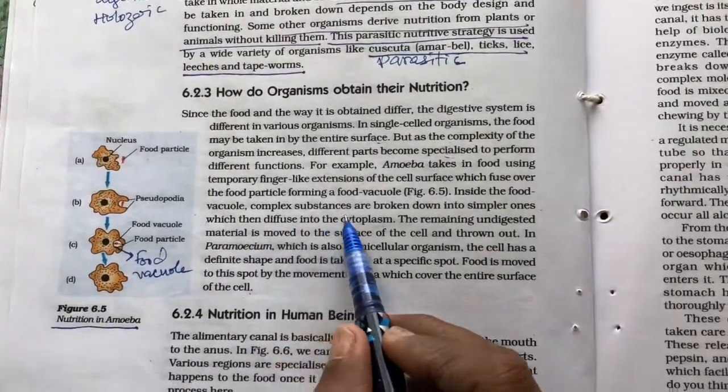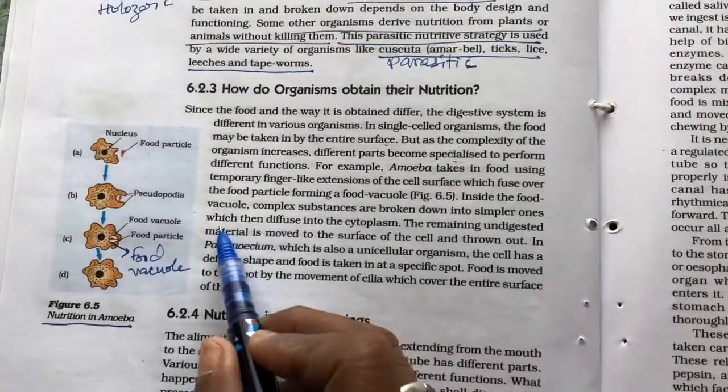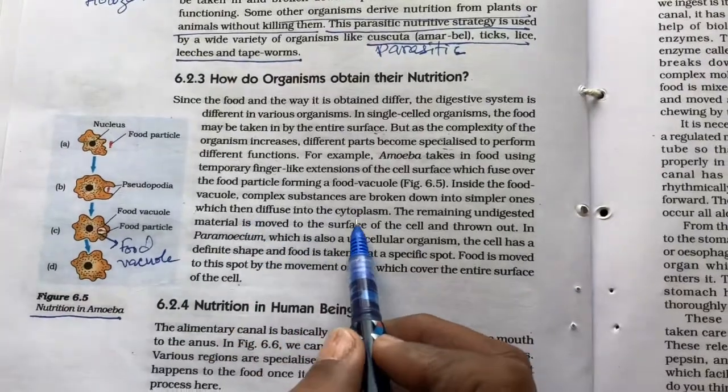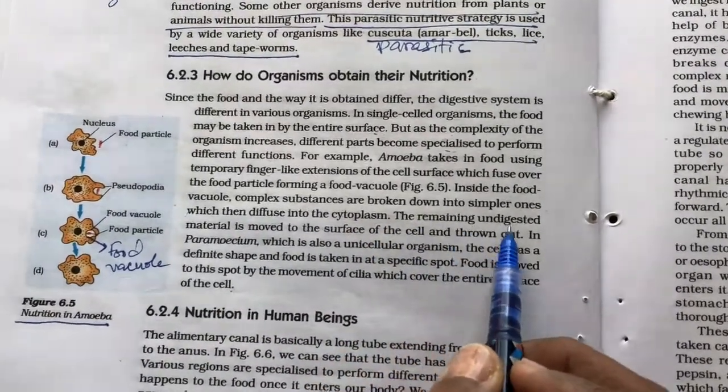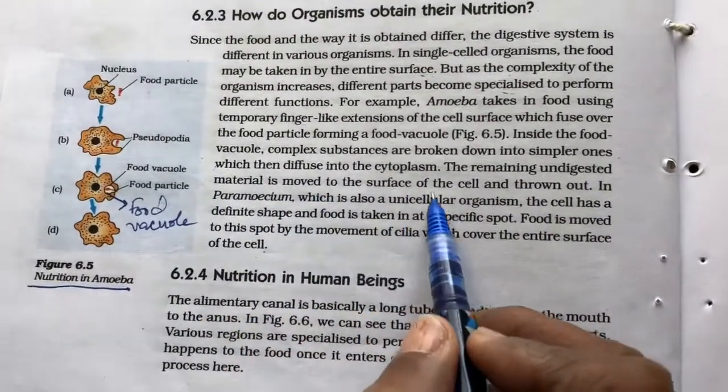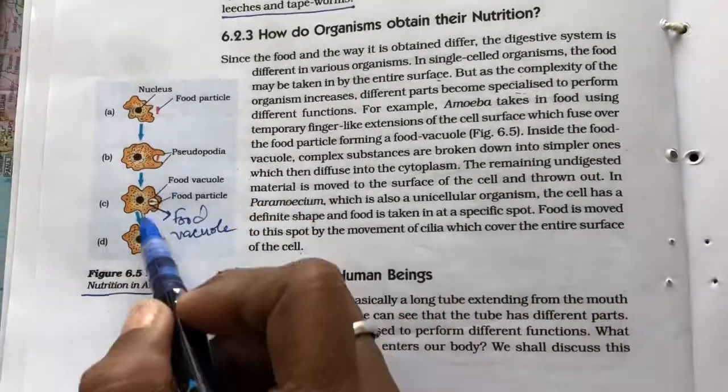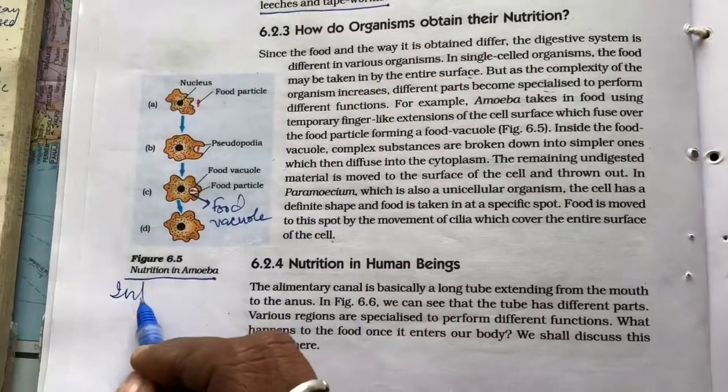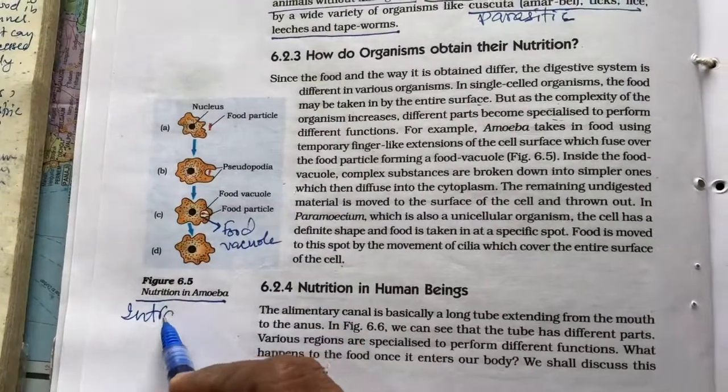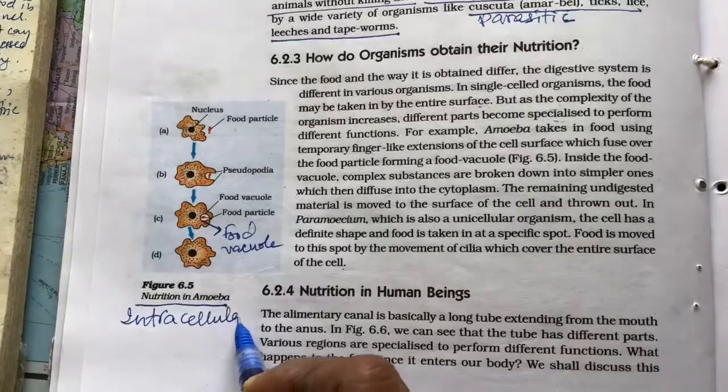Inside the food vacuole, complex substances are broken down into simpler forms which then diffuse into the cytoplasm. The remaining undigested material is removed to the surface of the cell and thrown out. This type of digestion is called intracellular digestion.